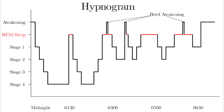Describe stage N2 of sleep. Stage N2 is deeper sleep, and this is where bruxism happens — bruxism is grinding your teeth. The EEG waveforms seen in stage N2 are sleep spindles and K complexes.